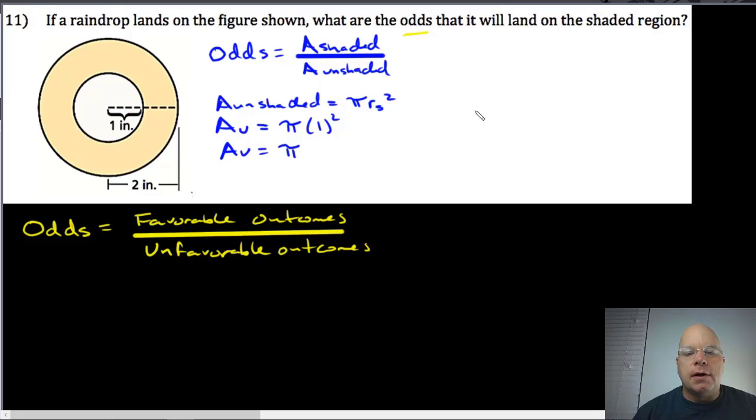The area of the shaded region will be the area of the large circle minus the area of the small circle. The area of the large circle is π multiplied by two squared. The area of the small circle is the same as the area of the unshaded region. That's just π.